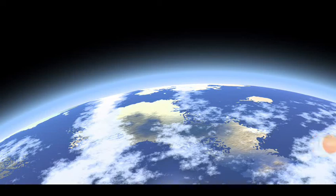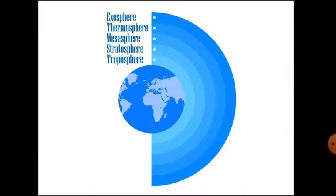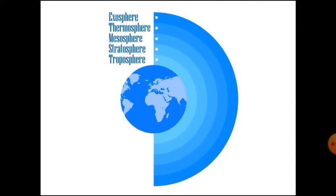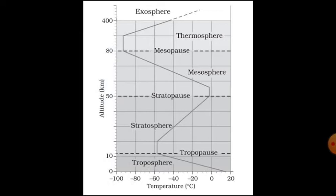Hi students, today's topic of discussion is layers of atmosphere. The atmosphere is divided into five layers based on composition, temperature and other properties. These layers starting from the earth's surface are troposphere, stratosphere, mesosphere, thermosphere and exosphere. So let us start discussing these layers of atmosphere one by one.